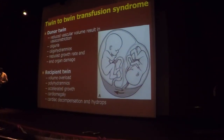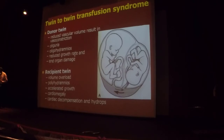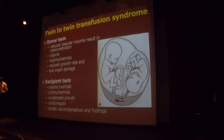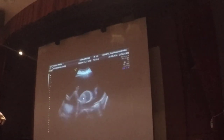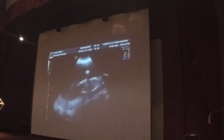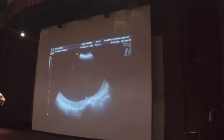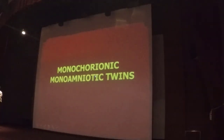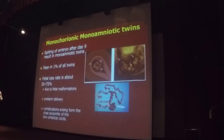The donor twin will have reduced vascular volume, oliguria, oligohydramnios, reduced growth rate, and organ damage. The recipient twin will have volume overload, polyhydramnios, accelerated growth, cardiomegaly due to increased workload, cardiac decompensation, and hydrops. On scan, you see one fetus with a full bladder and a lot of liquor — the recipient — and the other smaller fetus pushed to the edge — the donor. When recognized at that stage, laser photocoagulation can be done. Both babies can be delivered safely with good outcome.